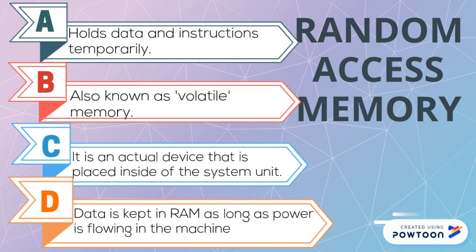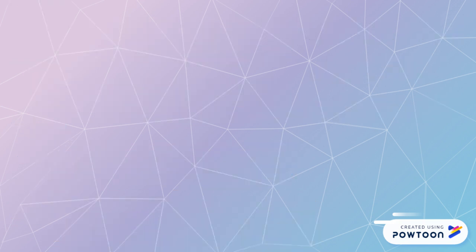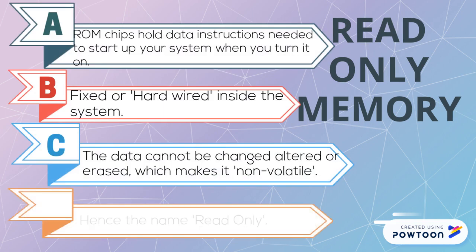Now let's look at ROM, which stands for Read Only Memory. This is a chip inside of the system unit — it's basically part of the computer itself. This chip holds instructions that are going to start up your system when you turn it on. It is fixed or hardwired inside of the system.